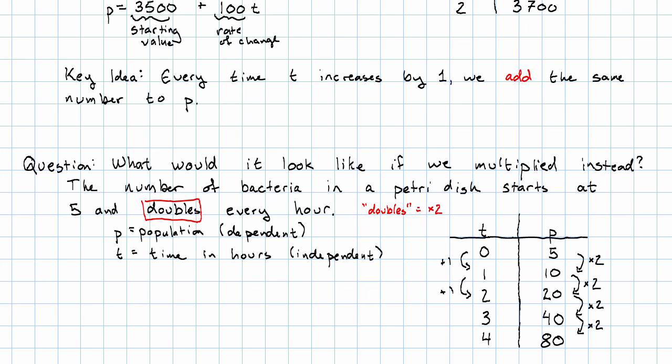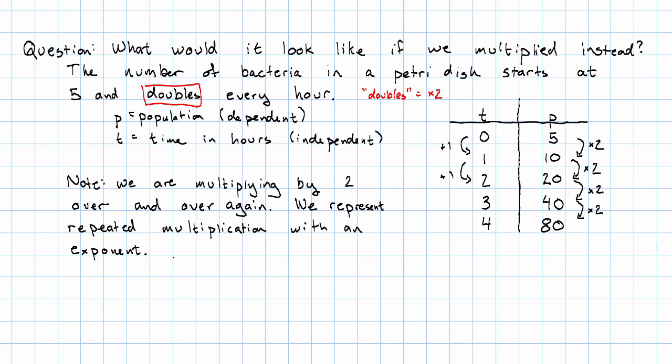What would this equation look like? We're multiplying by 2 over and over and over again. How do we represent repeated multiplication? That's what exponents are for.